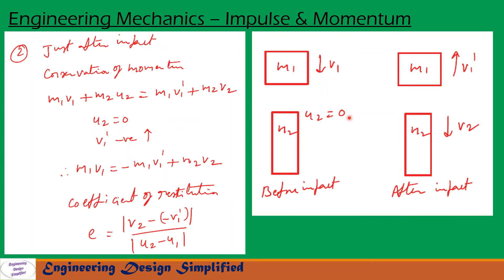Applying the conservation of momentum equation: m1·v1 + m2·u2 = m1·v1′ + m2·v2. Since u2 = 0 and v1′ is directed upward (taken as negative), this becomes m1·v1 = −m1·v1′ + m2·v2. The coefficient of restitution is e = |v2 − v1′| / |u2 − u1|, where the modulus ensures a positive value. Here u1 is replaced by v1, the initial velocity of the hammer. Using these two equations, v1′ and v2 can be solved.